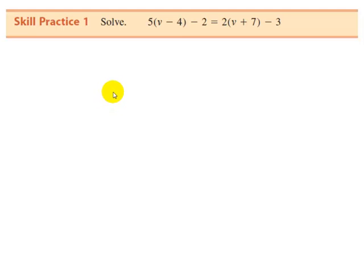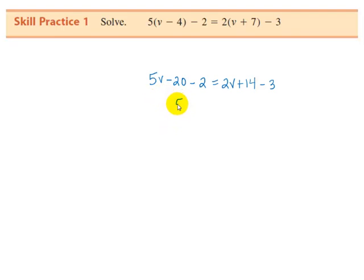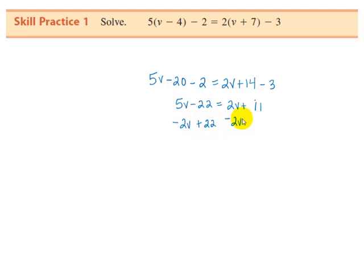Let's check your work. You should get 5v minus 20 minus 2 equals 2v plus 14 minus 3. This simplifies to 5v minus 22 equals 2v plus 11. Subtract 2v from each side and add 22 to each side. Then divide each side by 3 to get v is equal to 11.